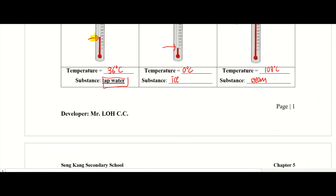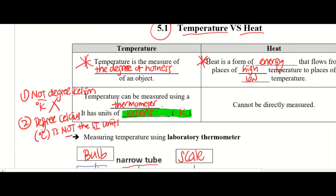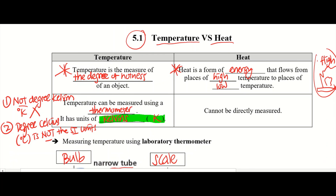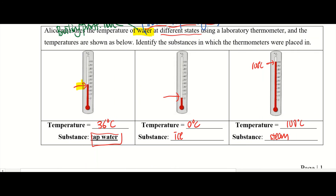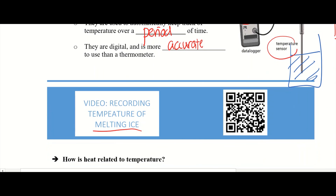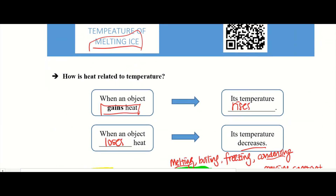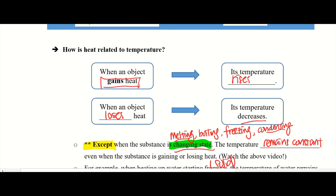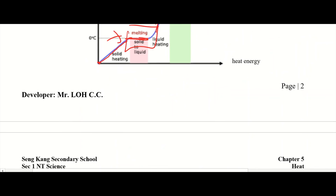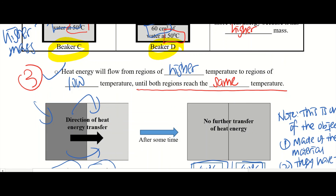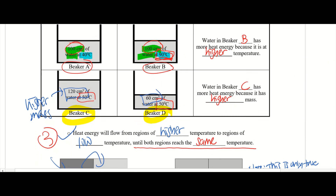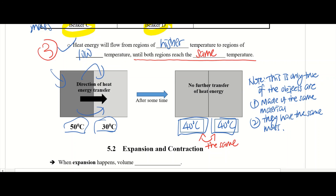I hope you learned something today. Let's recap: today in this lesson, we learned about the difference between temperature and heat — these are two common terms that people tend to mix up. We learned about the different parts of a lab thermometer, we learned how to read a lab thermometer, we discussed the data logger — please go and watch the video, I'll link it in the description below. And since we talked about heat and temperature, we learned how they are related to each other. I hope you have fun. See you in the next video — take care!